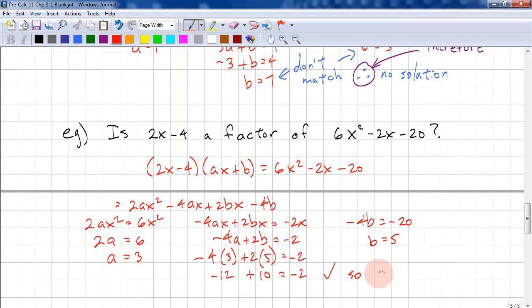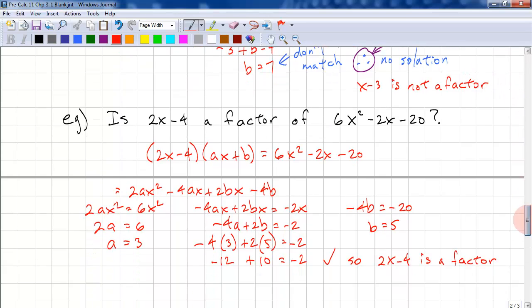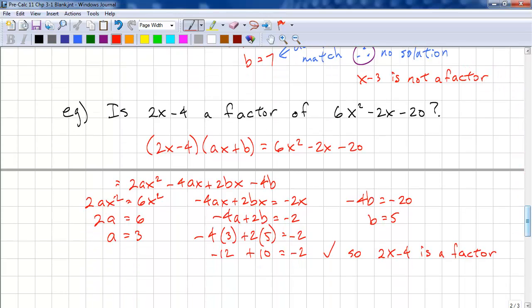So 2x - 4 is a factor. And sorry, we have to say no solution. x - 3 is not a factor. That completes this lesson.